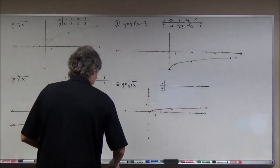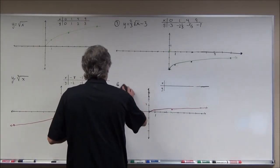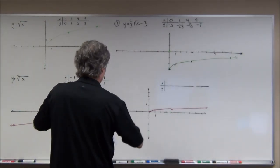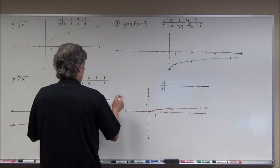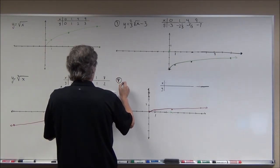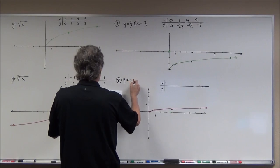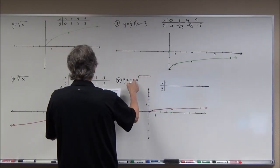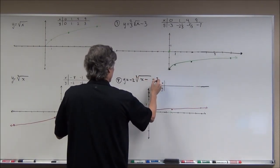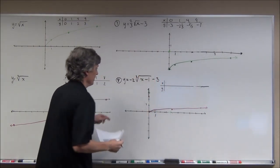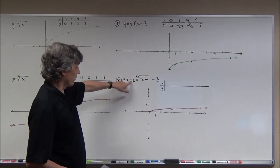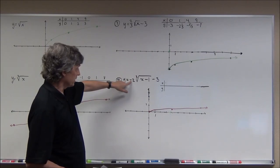Problem 8: y equals negative 2 times the cube root of (x − 1) minus 3. The negative 2 is going to do a lot here — because of the negative it's going to reflect it across the x-axis, and the 2 will stretch it. Plus it's shifted one to the right and three down.